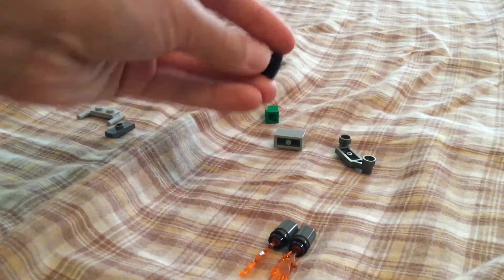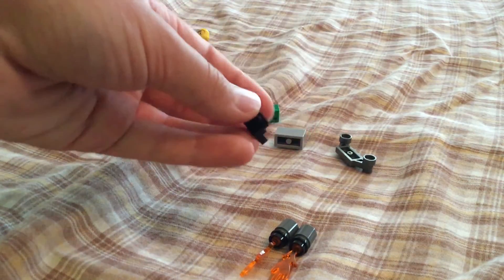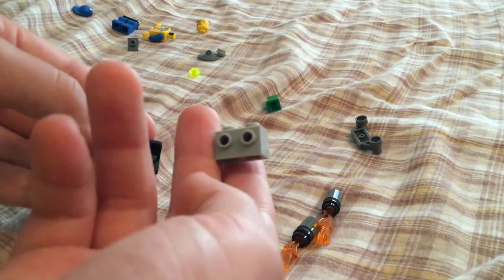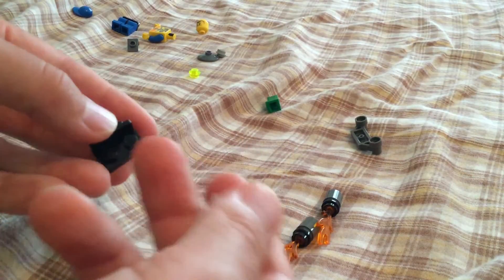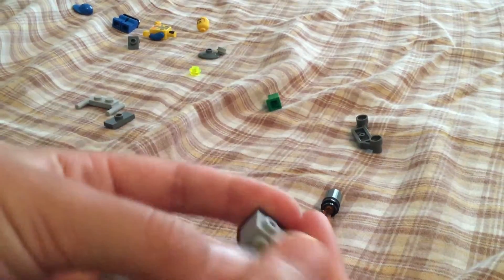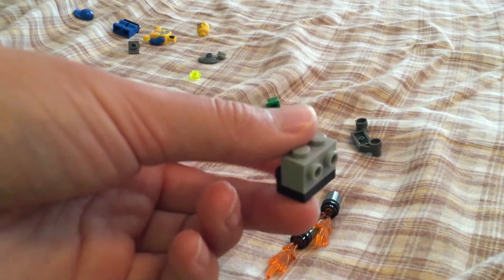Next step, you're going to get a 1x2 that has two studs on the side, and then another 1x2 that has two studs on the side, and put that on like this.